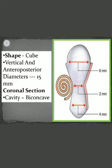The shape of the tympanic cavity is like a cube. The vertical and anterior-posterior diameters are the same — 15 mm. In coronal section, if you view this cavity, it appears biconcave in shape. The medial wall and the lateral wall are closest at the center, because of which the anterior wall becomes narrow. The distances separating the roof, center, and floor are 6 mm, 2 mm, and 4 mm respectively.